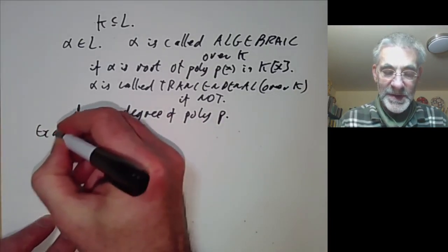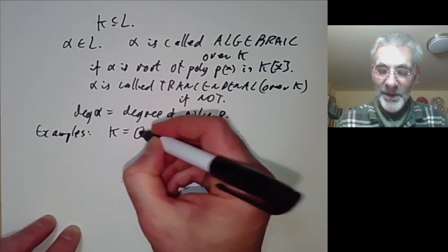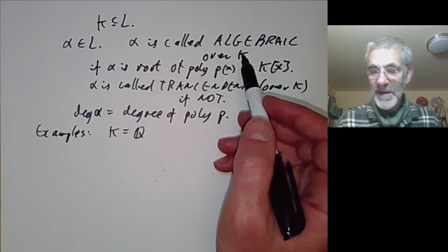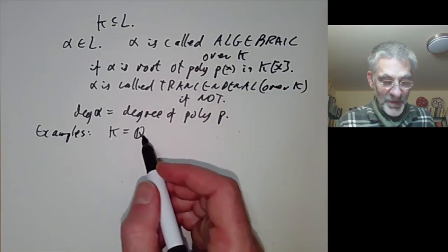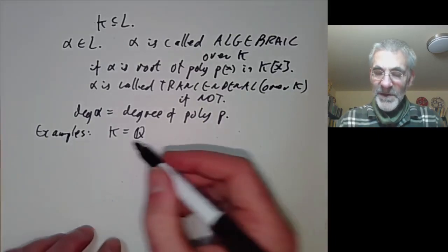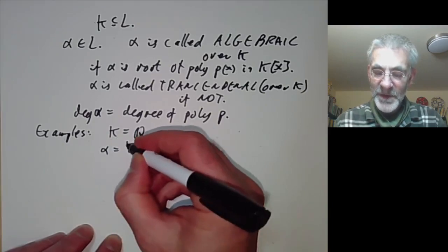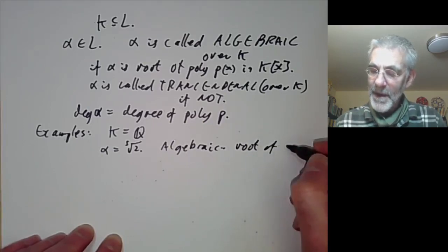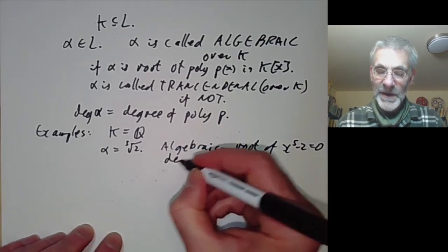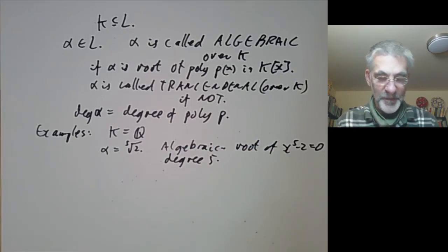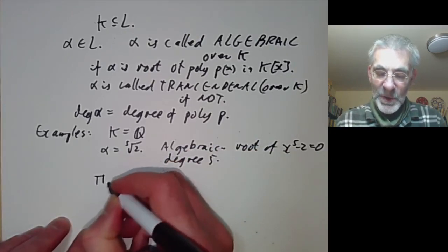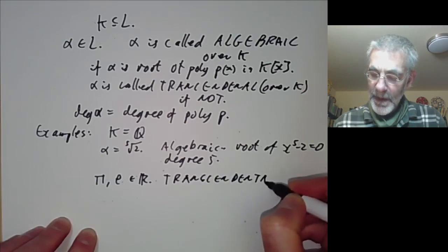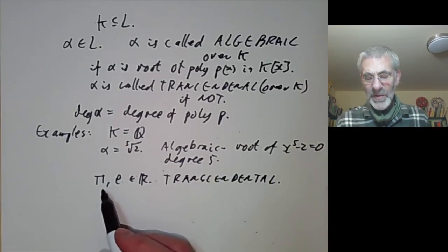Let's take K to be the rational numbers. If you talk about a number being algebraic or transcendental without specifying the field, you usually mean working over the rationals. If we take alpha to be the fifth root of 2, this is obviously algebraic because it's a root of x⁵ − 2 = 0, and it has degree 5. If you look at the numbers π or e in the reals, then these are transcendental. This is rather difficult to prove.